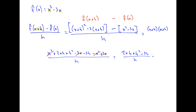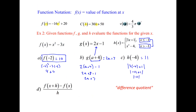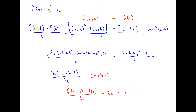It looks like you might be done simplifying, but not quite, because there's an h in all the top terms. Factor out h to get h times the quantity 2x plus h minus 3, divided by h. The h's cancel, and your final answer is 2x plus h minus 3. So f of x plus h minus f of x, all over h, equals 2x plus h minus 3. That's an example of the difference quotient.